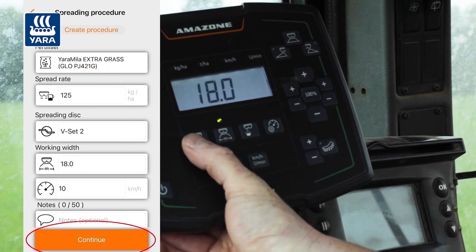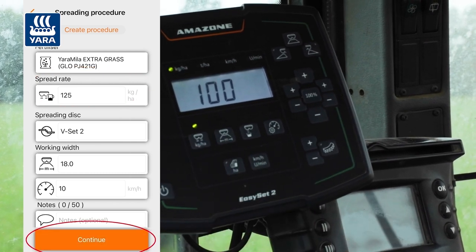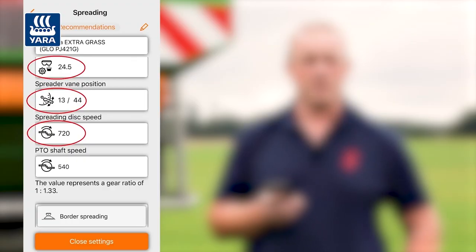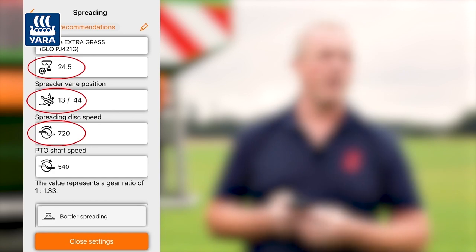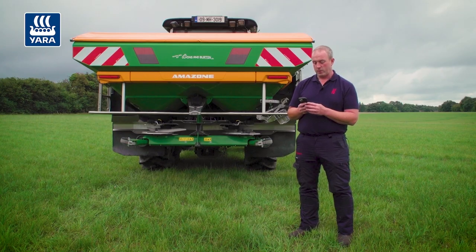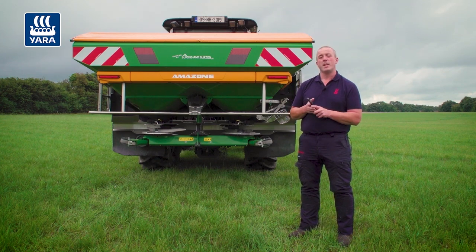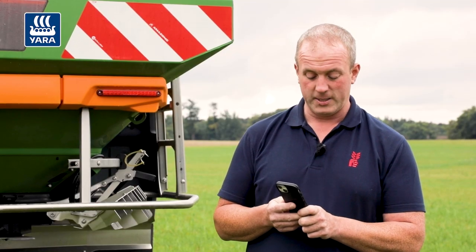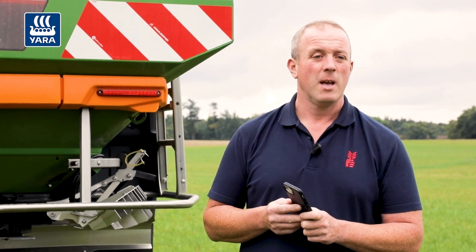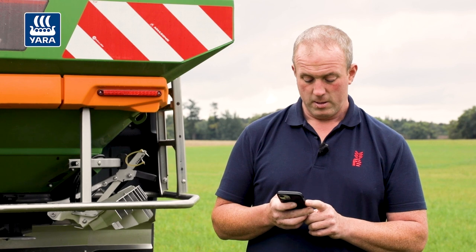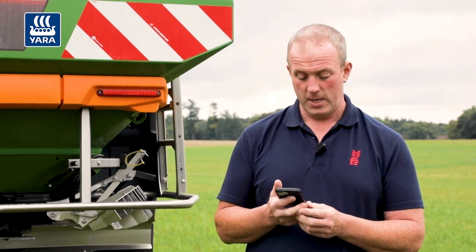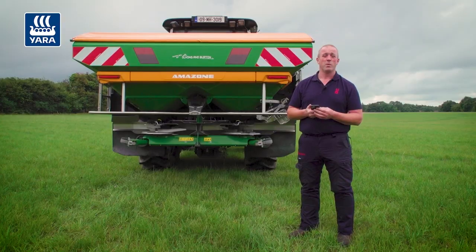From that it gives us a basic shutter position and a disk speed of 720 RPM. It also gives us our border spreading settings — the border spreader position is letter C at 60 for height. Our switching on point is 15 meters and our switching off point is 3 meters.